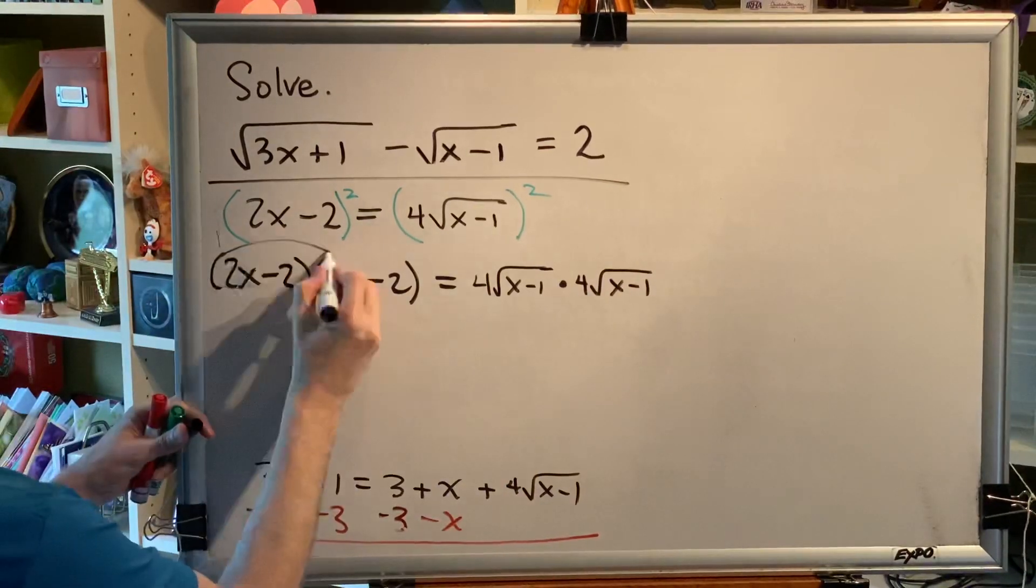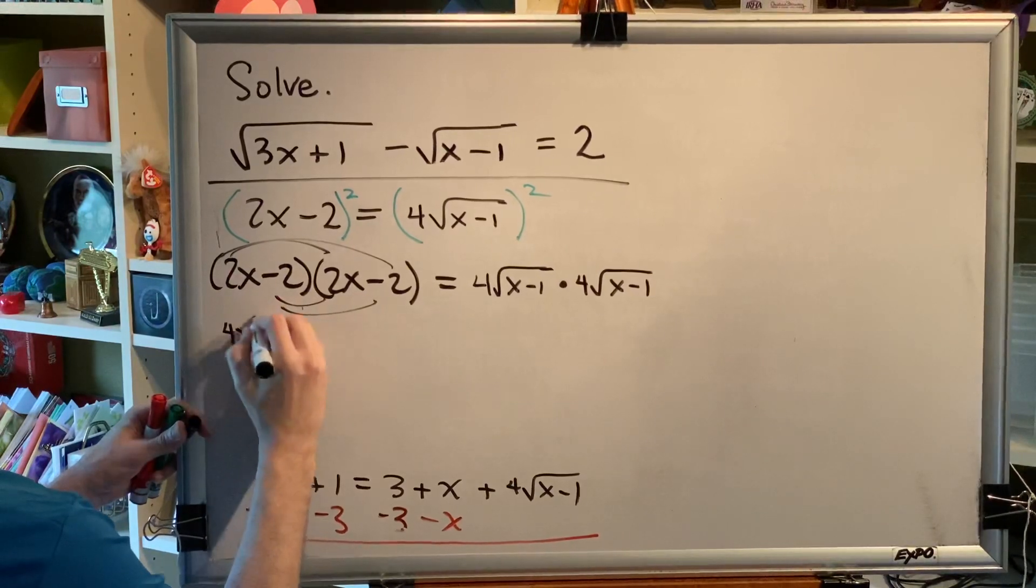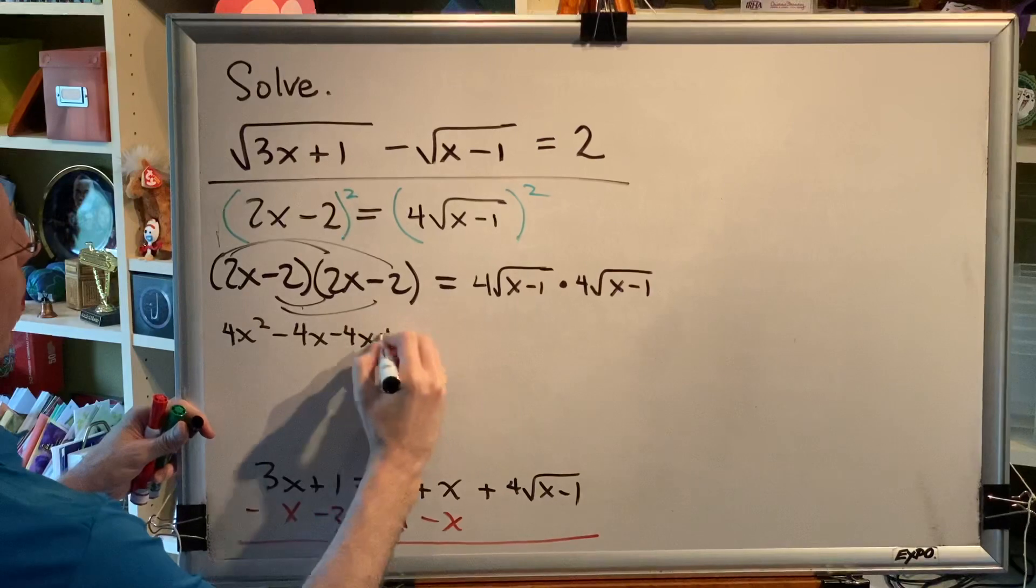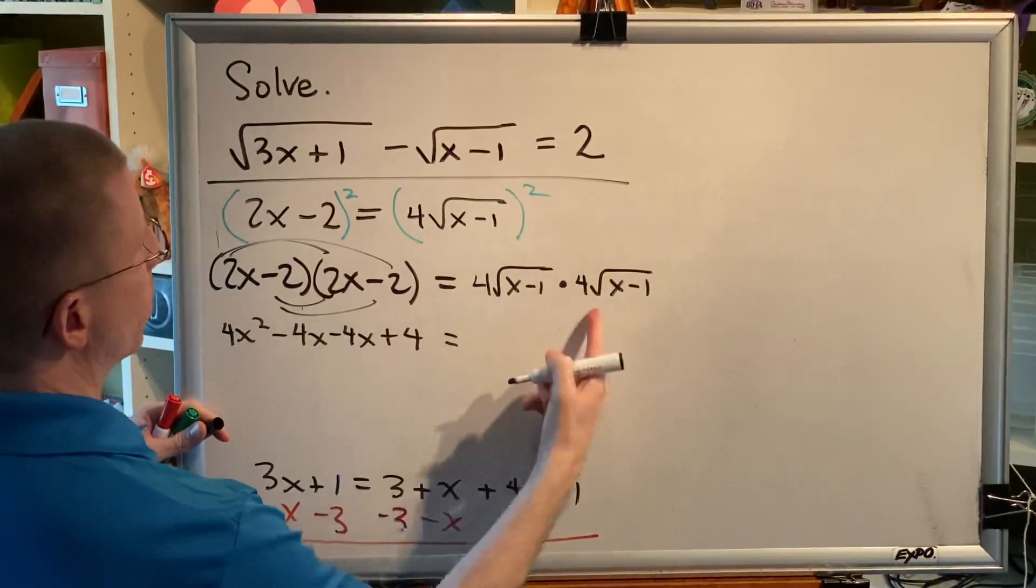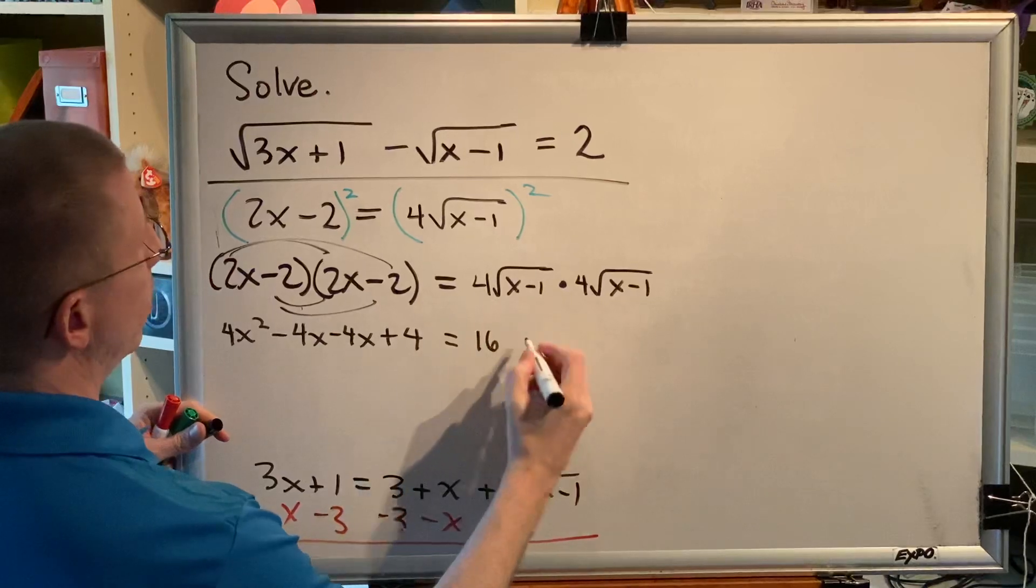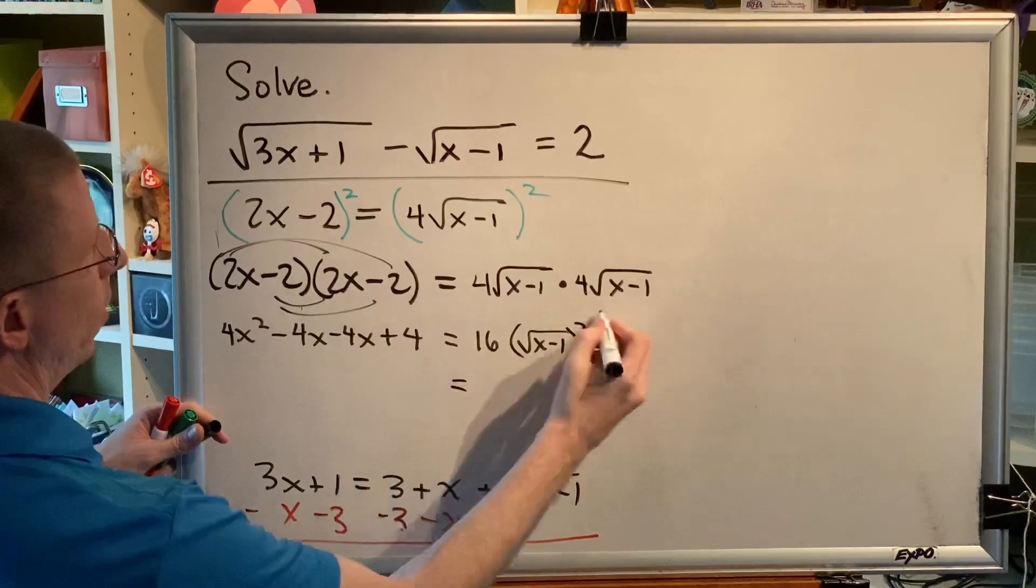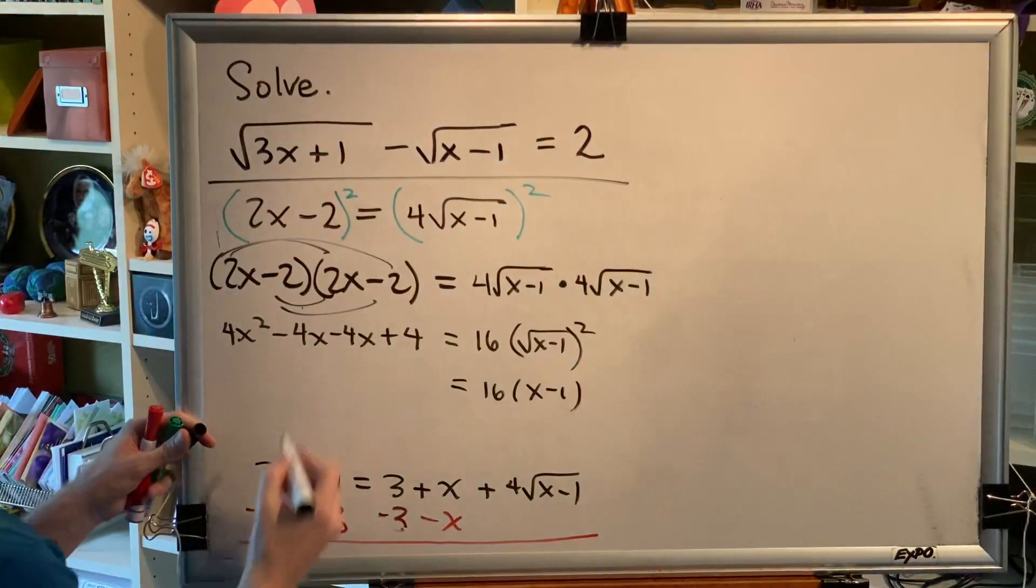Using FOIL on the left, we get 4x squared minus 4x minus 4x plus 4 equals. On the right, the outside numbers multiply, which is 16, and the radicals multiply. So we'll have a square root of x minus 1 squared. The square and the square root cancel, leaving an x minus 1 in parentheses.